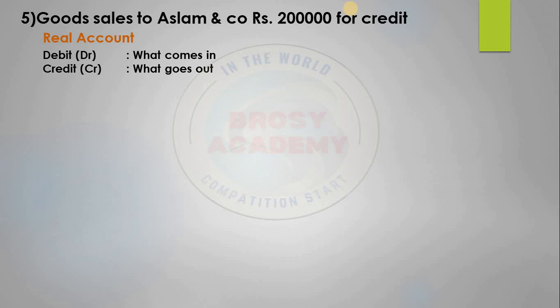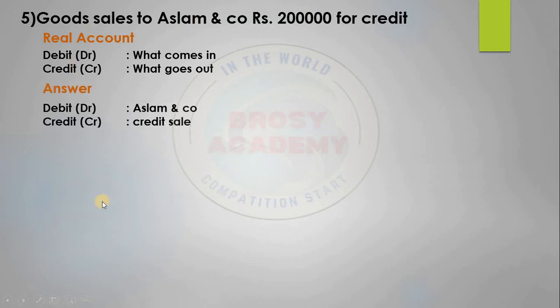So the answer: debit Aslam, credit sale. If debit is Aslam & Co., credit is sale.